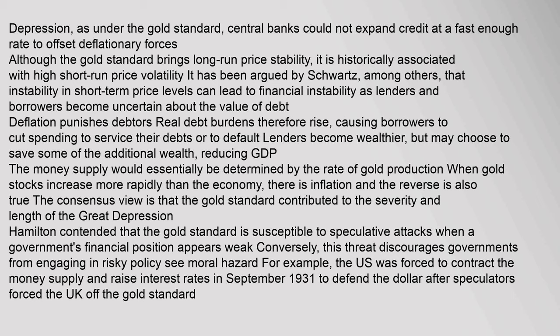Instability in short-term price levels can lead to financial instability as lenders and borrowers become uncertain about the value of debt. Deflation punishes debtors — real debt burdens rise, causing borrowers to cut spending to service their debts or to default, while lenders become wealthier but may choose to save, reducing GDP. The money supply would essentially be determined by the rate of gold production; when gold stocks increase more rapidly than the economy, there is inflation, and vice versa. Hamilton contended that the gold standard is susceptible to speculative attacks when a government's financial position appears weak; for example, the US was forced to contract the money supply and raise interest rates in September 1931 to defend the dollar after speculators forced the UK off the gold standard.